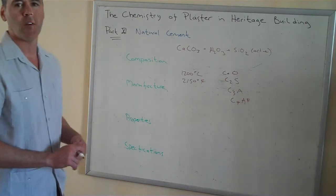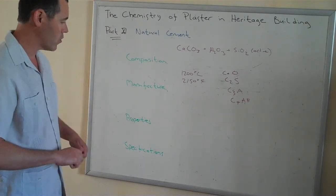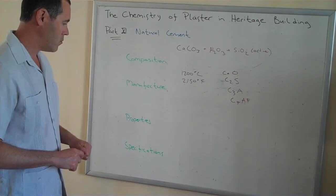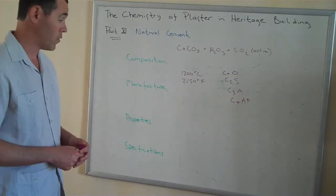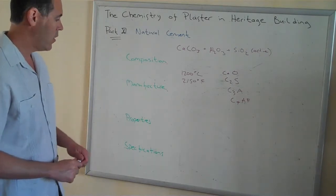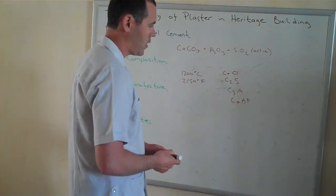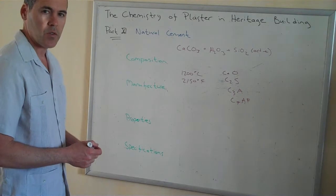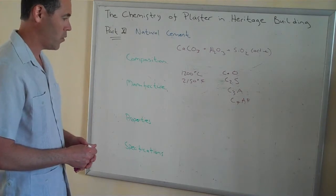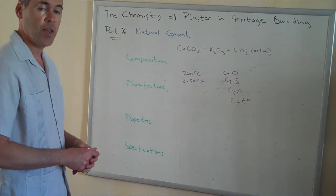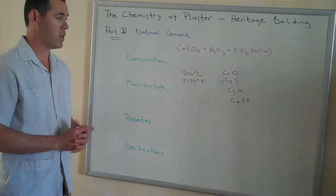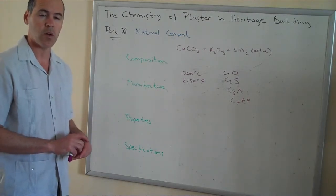What does that mean for us as masons and plasterers working in heritage materials? One of the main properties of natural cement is that it has a very rapid set — at least an initial set. Sometimes that set can be as fast as 10 to 20 minutes, which makes it really useful for casting and running things in place. To do that type of work, sometimes you even have to retard it. It was the cement of choice before the advent of ordinary Portland cement.